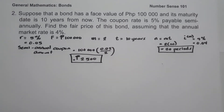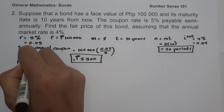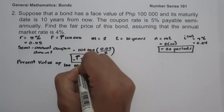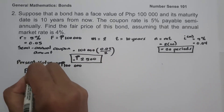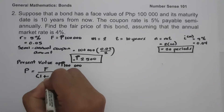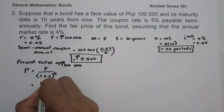So the semi-annual coupon amount is 2,500 pesos. That means the bondholder receives 20 payments of 2,500 pesos each and 100,000 pesos at t = 10. The next step is to compute the present value of 100,000 pesos. To find the present value, we use the formula: Present Value = Face Value divided by the quantity (1 plus interest rate per period) raised to time.